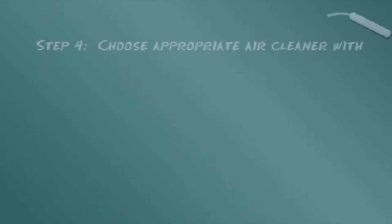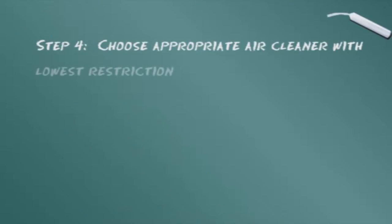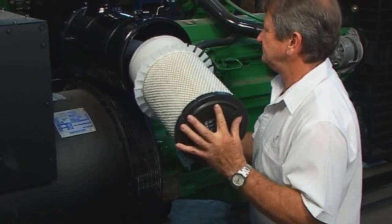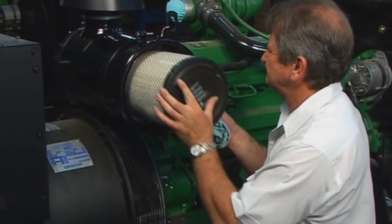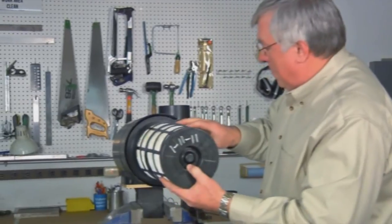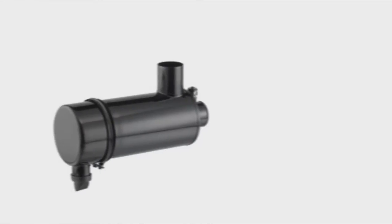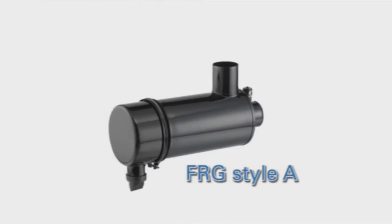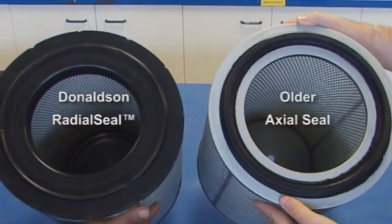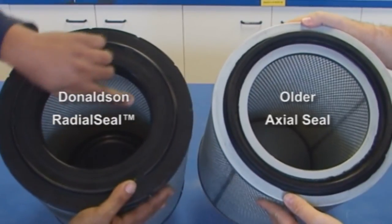Using the airflow rate, the fourth step is to narrow your choices within these air cleaner families to the air cleaner model with the lowest restriction values. If there are two air cleaner models that will fit your parameters, choosing the one with the lowest restriction will generally provide the longest filter service life. In this case, let's assume your vehicle will take an FRG style A air cleaner with airflow in the side and out the end.